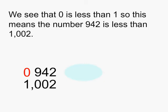We see that 0 is less than 1, so this means the number 942 is less than 1,002.